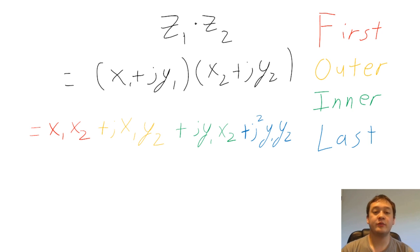Remember that j squared is equal to negative 1. Finally, we must reorganize the variables to put the real parts together and the imaginary parts together.